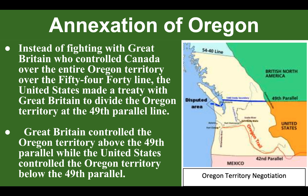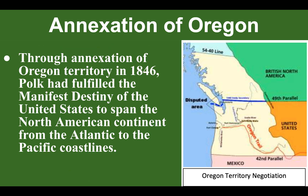You can look at the map right here. British North America is shown in green. The United States is below the 49th Parallel in orange. Great Britain controlled the Oregon Territory above the 49th Parallel Line, while the United States controlled the Oregon Territory below it. Through the annexation of the Oregon Territory in 1846, Polk had fulfilled Manifest Destiny for the United States to span the North American continent from the Atlantic to Pacific coastlines.